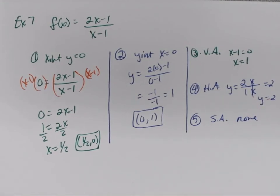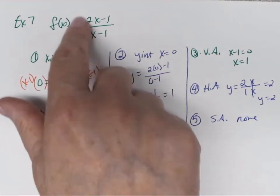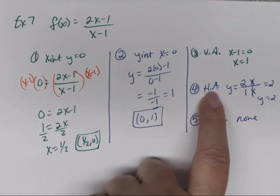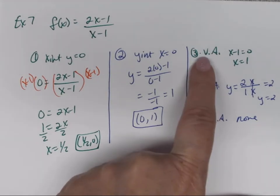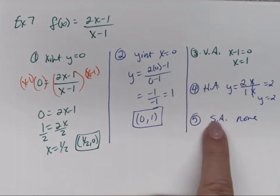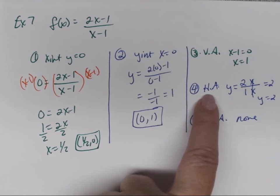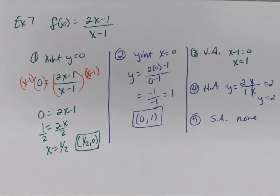A mnemonic to remember: vertical asymptote goes with the valley (denominator); horizontal asymptote goes with highest degree; slant asymptote uses synthetic division. So: valley=vertical, highest=horizontal, synthetic=slant. That might help you remember the methods.